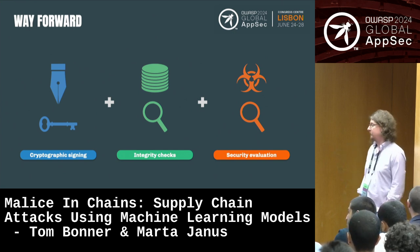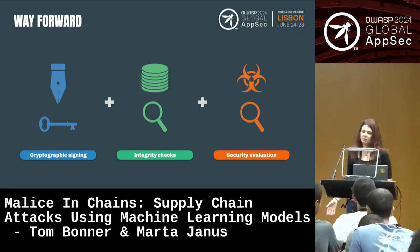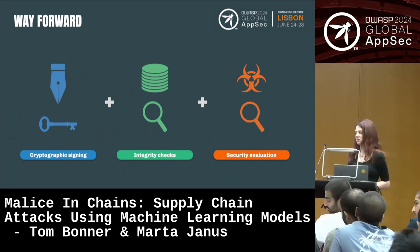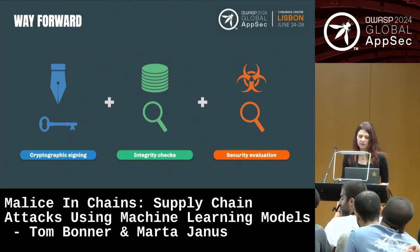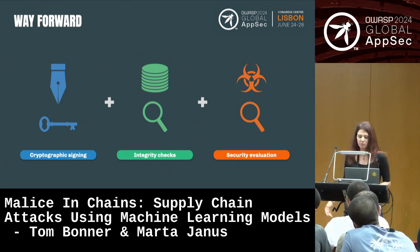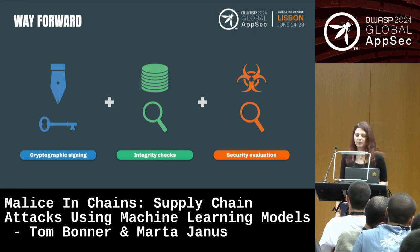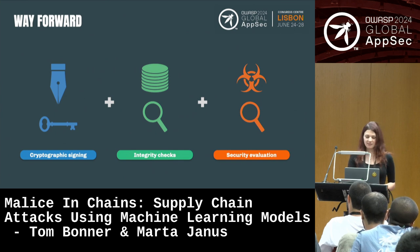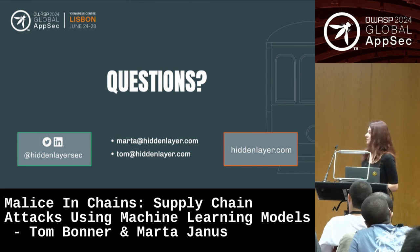Then we have integrity checks — we should check models for integrity. It might take time to compute checksums on 100 gigabyte models, but that's something we should be doing to make sure nobody has tampered with the model, injected code, or embedded a payload. And security evaluation: definitely scanning for malware, for malicious code, and also for vulnerabilities, and patching all those vulnerabilities in machine learning frameworks. That would be it from us. If you have any questions, Tom and Marta are happy to answer.